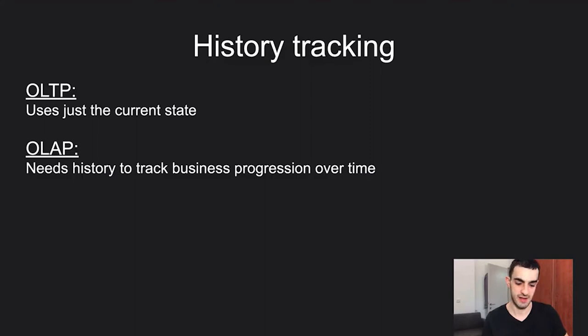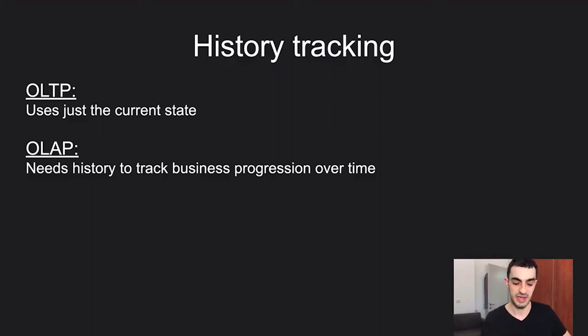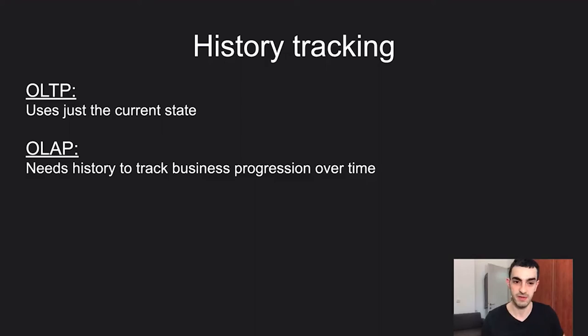Next is history tracking. In OLTP we only need the current state — we present the user what their current state is. In OLAP we need history to track business progression over time. For example, in an application we show the user their current cart and its products, but in OLAP we want to know the progression of products added to the cart for analysis. That's another key difference for OLAP.